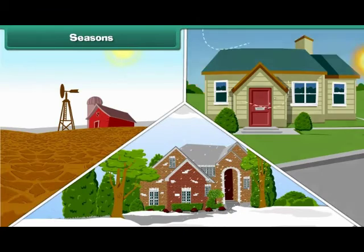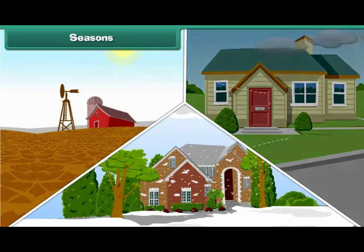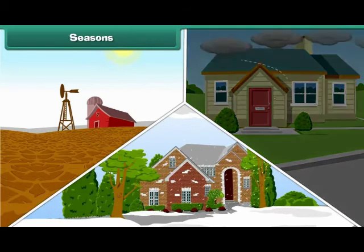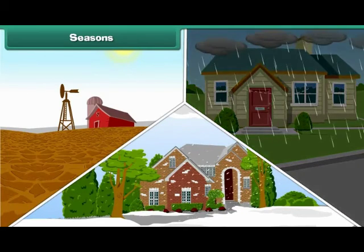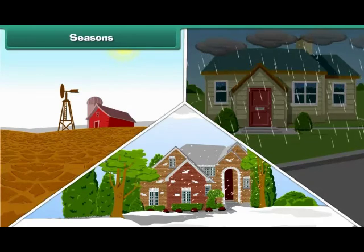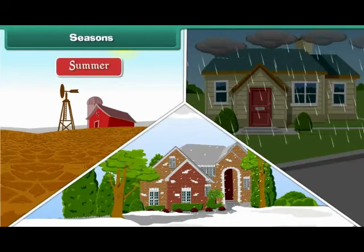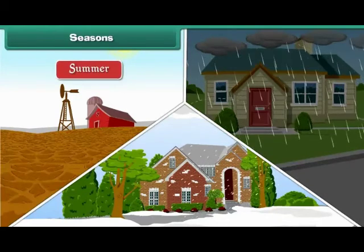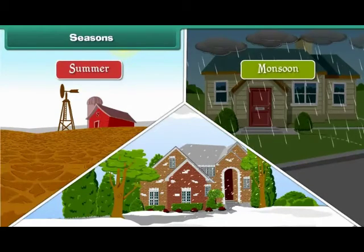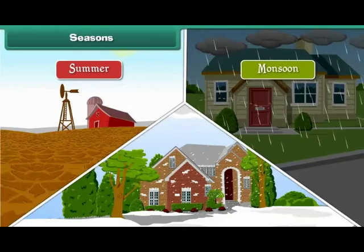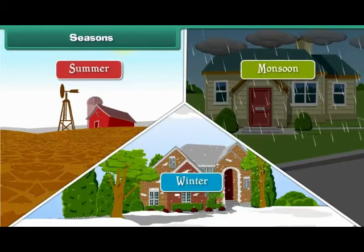There are three main seasons in India. They are summer, monsoon, and winter.